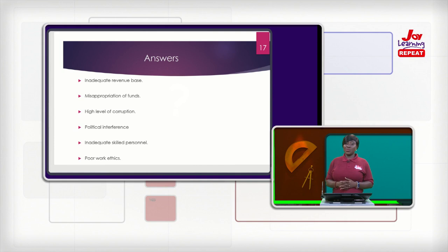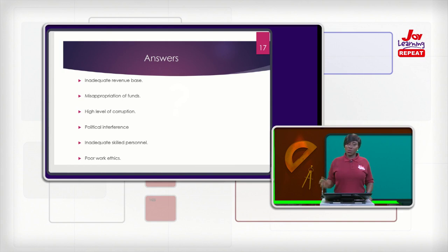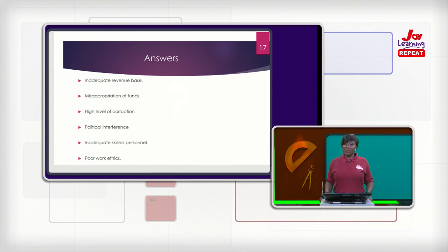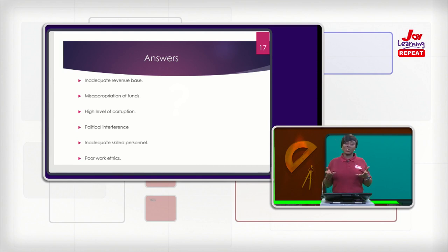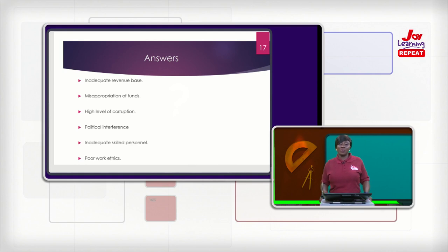Then there is poor work ethics. People will go to work late; people will leave early. On Friday by 12 o'clock, people are already home. People are at funerals and the assembly has been left. People come to work and, instead of doing what they have been asked to work on, they are doing their own thing — on WhatsApp, Twitter — doing business online while they should be doing the work of the assembly. These are challenges that face the district, municipal, and metropolitan assemblies.